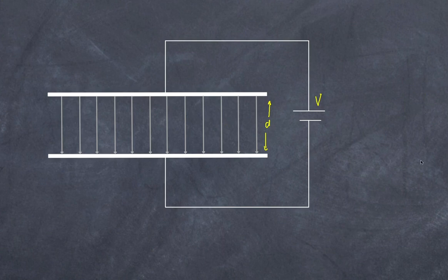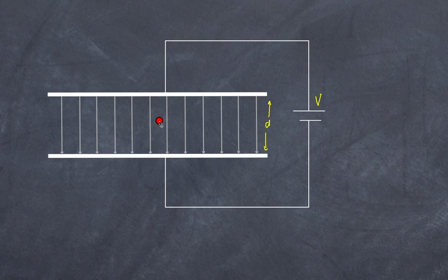Within this electric field we're going to place an elementary charge — in this case a positive charge. What's going to happen? If it's free to move, it's going to experience a force and therefore accelerate. The direction of the electric field lines suggests it will start to move in a downward direction.